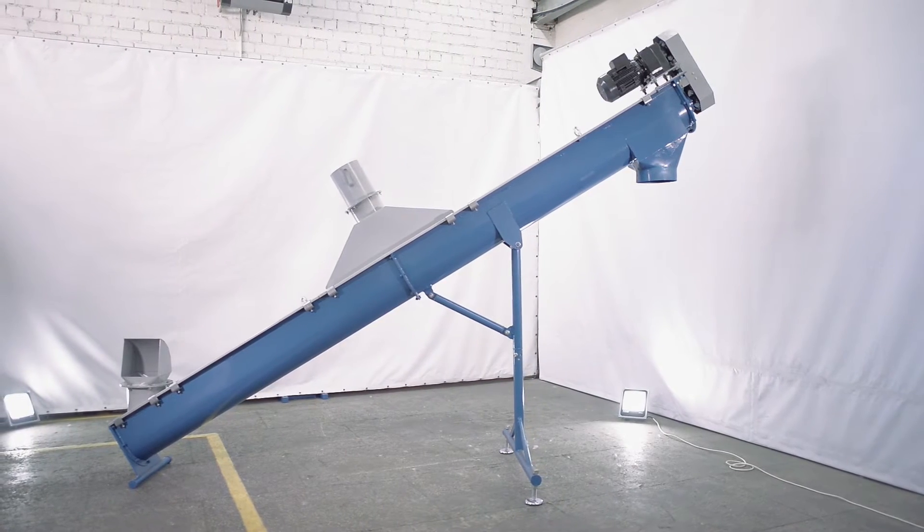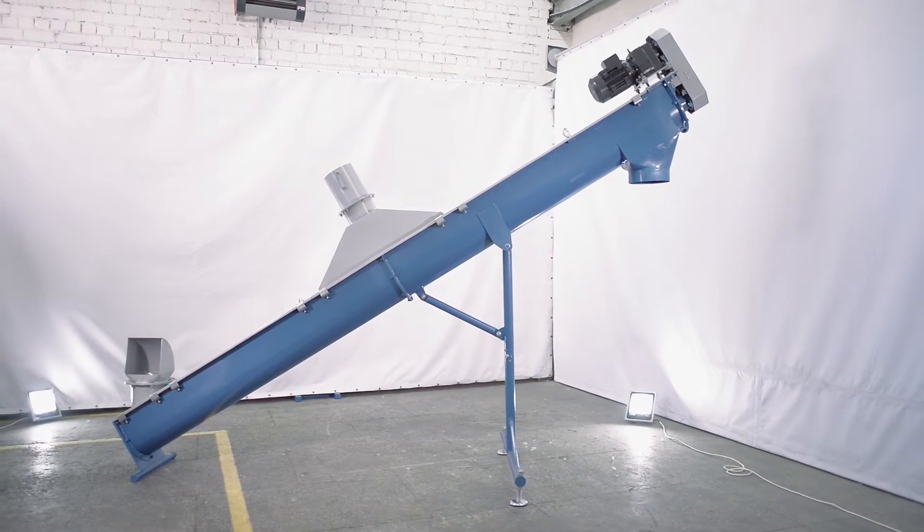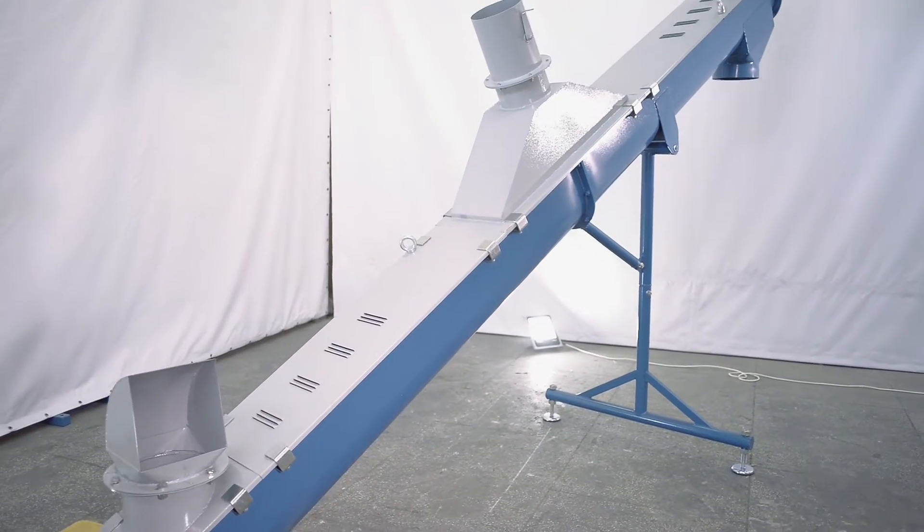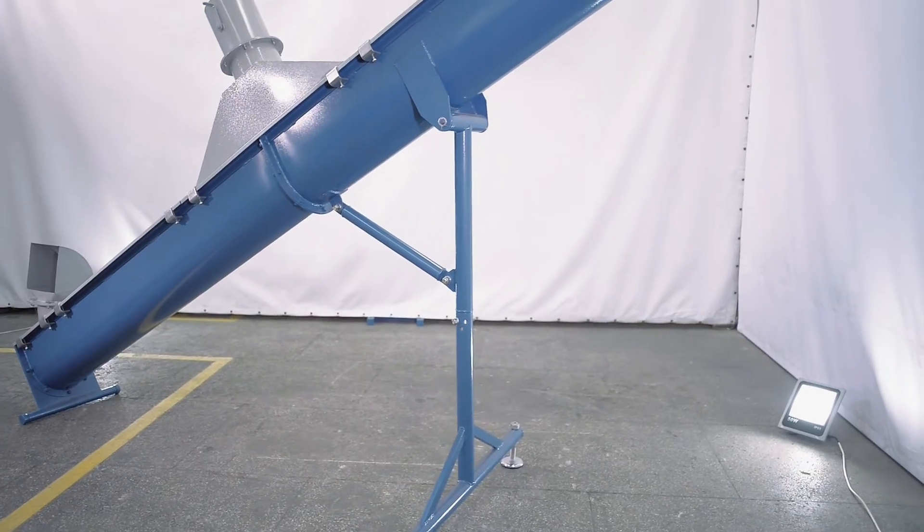The screw feeder is used to perform three main functions. The first function is to transport material between two separate machines, for example from the extruder to the oil press.